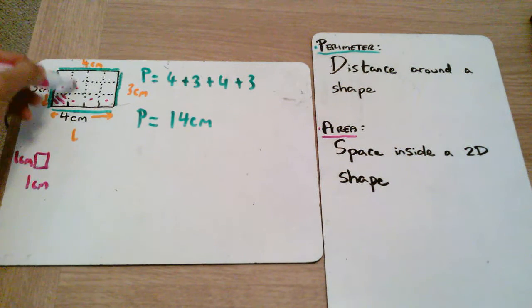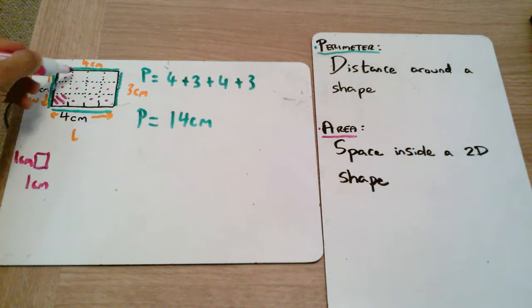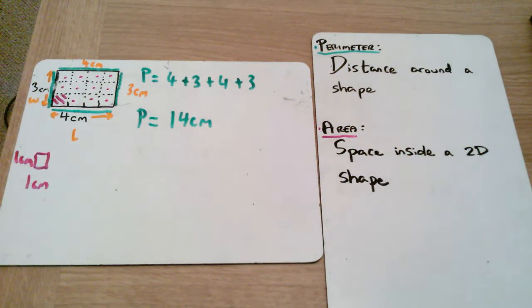Now if I was to count the number of squares in there: one, two, three, four, five, six, seven, eight, nine, ten, eleven, twelve. So we have twelve square centimeters. Now normally we're not given the dotted lines in the middle, so we need to maybe find a way of doing this without just counting squares.